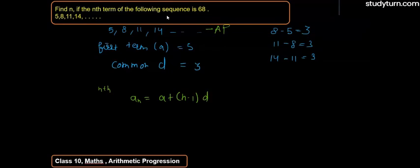So nth term value is 68. So a here is 5, and n minus 1 as it is, and d value is 3.